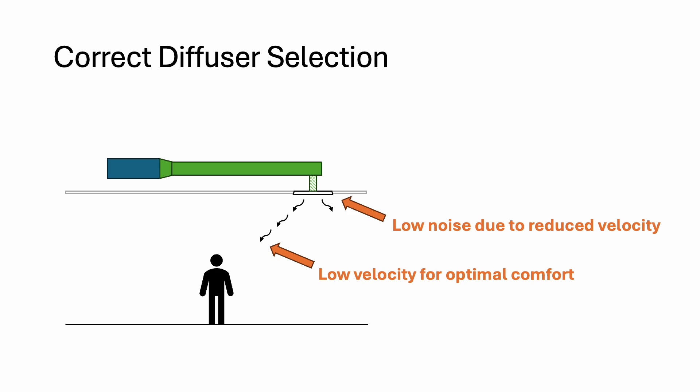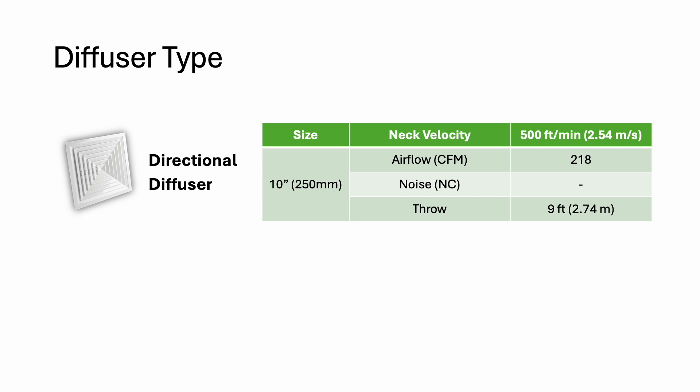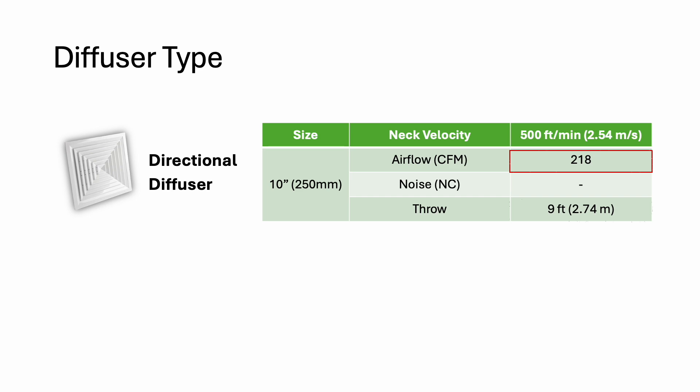Now, what does that have to do with the diffuser patterns? It turns out different patterns have different characteristics — meaning one pattern is good at controlling noise while another may be good at providing a longer throw. For example, when handling 200 CFM of airflow, a 10-inch directional diffuser has a throw distance of 9 feet.